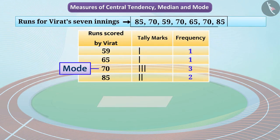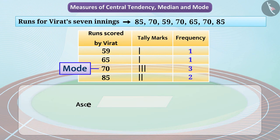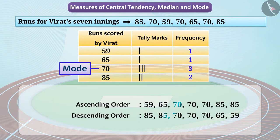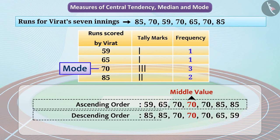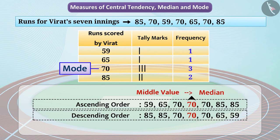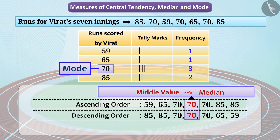If we arrange this group of runs in ascending or descending order, the mid value is 70. This value divides the observations into two equal groups, each of which has three observations. When a range of data is arranged in ascending or descending order, the middle value is known as the median. As you can see, in this case the mode and the median are the same observation. However, this may not always be the case — the mode and the median can differ.